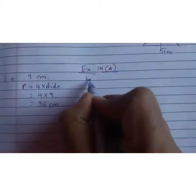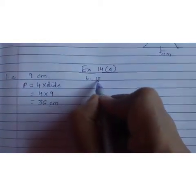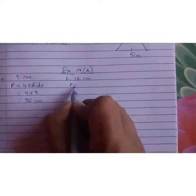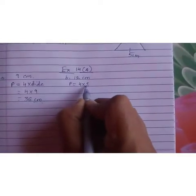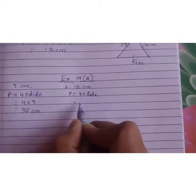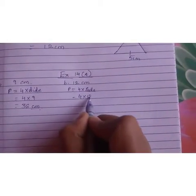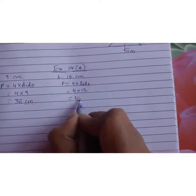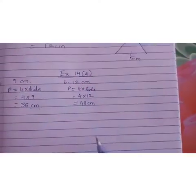Now moving to next. Question number B, it is 12 cm. Again, apply the same, P equals 4 into side. So 4 into 12. 12 fours are 48. So write 48 centimeters.